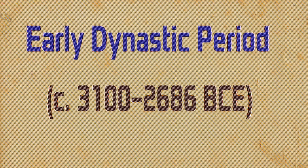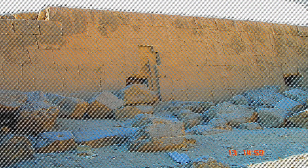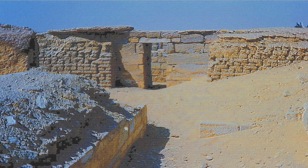With the rise of the early dynastic period, around 3100 BCE, we witness the emergence of mastabas — flat-roofed rectangular structures built above underground burial chambers. These mastabas served as the precursors to the grand tombs of the pharaohs that would follow.